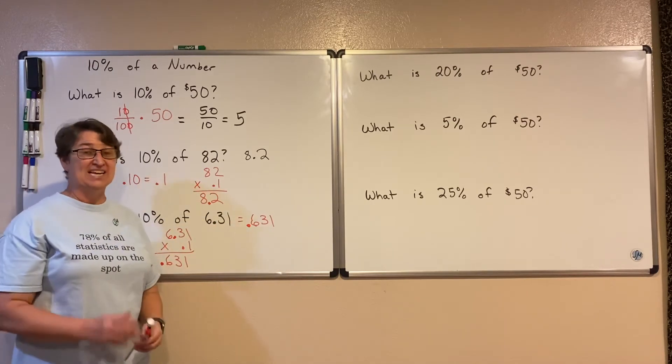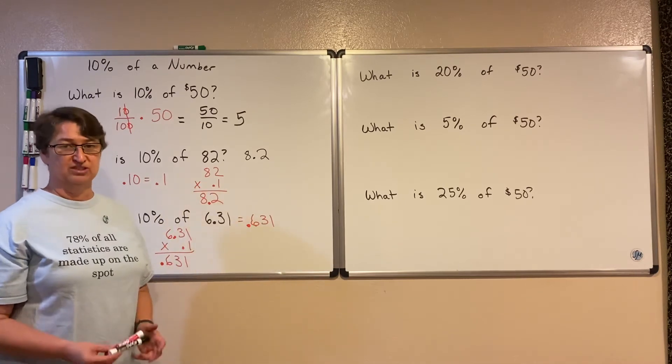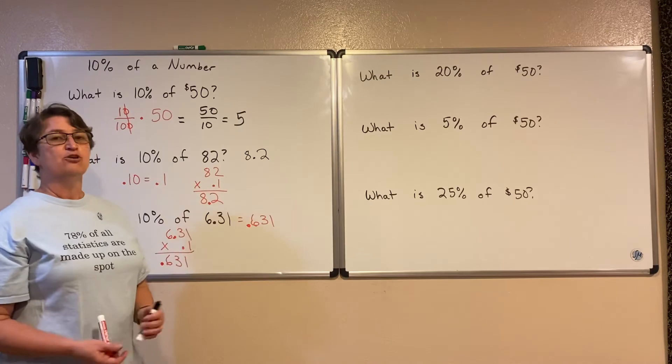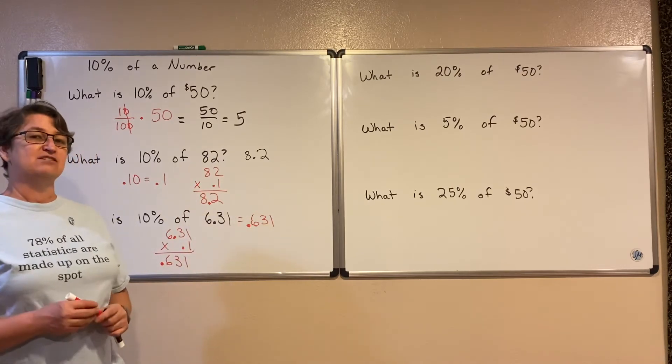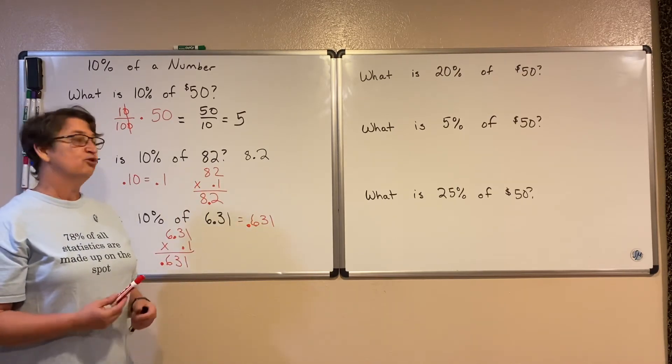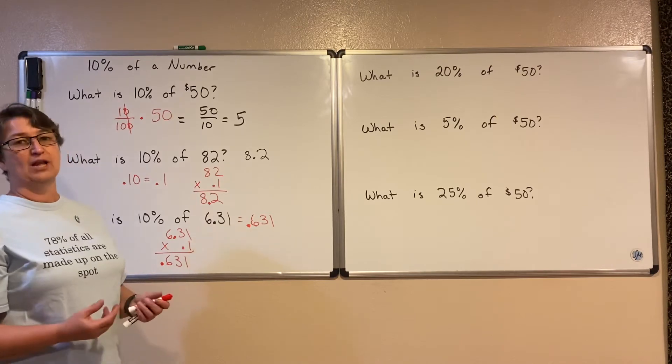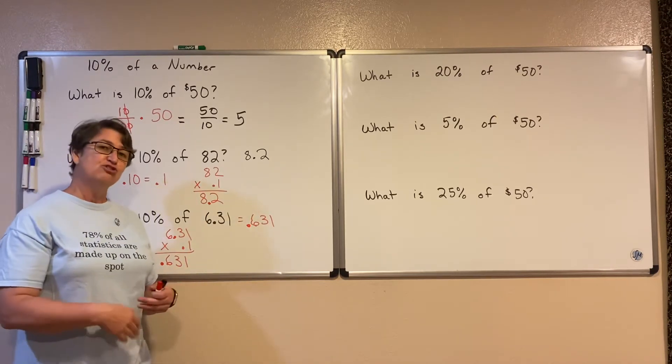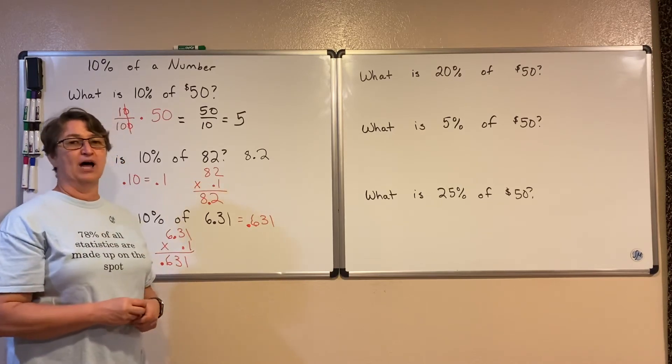It turns out that any time we're multiplying by 10%, our decimal is just going to move over one spot. So it makes it easy to find 10% of a number. So if you end up with some bill like $23.42, you can just move the decimal over one spot.